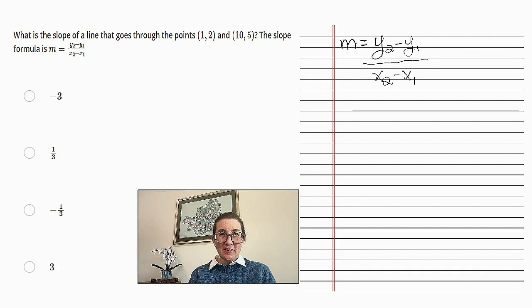Alright, our next question. What is the slope of a line that goes through the points (1,2) and (10,5)? The slope formula is m equals y2 minus y1 over x2 minus x1.